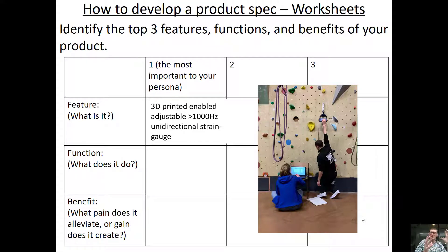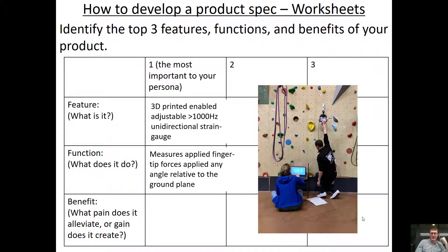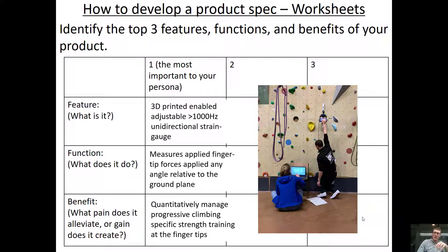You can already see a customer doesn't really care about the features — they might be important to you, but they don't mean much to the customer. The function of the metagrip is that it measures applied fingertip forces at any angle relative to the ground plane. Again, customers don't care about the function per se — what they care about is the benefit. In this case, it allows climbers to quantitatively manage their progressive, climbing-specific fingertip strength, so they can train like a bodybuilder — but for their fingertips. That's what excites climbers.